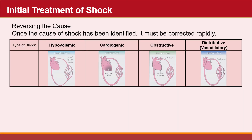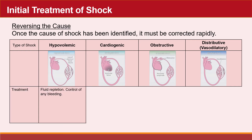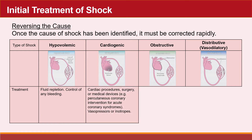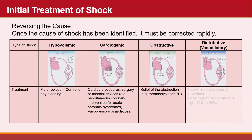The initial treatment of shock involves identifying the cause and reversing it rapidly. In hypovolemic shock, replenish fluids and control blood loss. In cardiogenic shock, cardiac procedures, surgery, or medical devices are utilized, and vasopressors or inotropes may also be needed. In obstructive shock, relief of the obstruction is required — for example, thrombolysis for pulmonary embolism. In distributive shock, primarily septic shock, the Surviving Sepsis guidelines must be followed. The mortality rate from septic shock is very high, ranging from 35 to 50 percent.